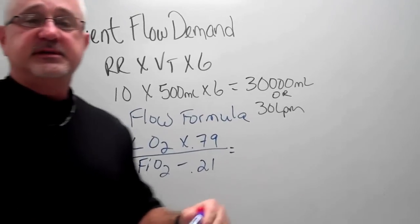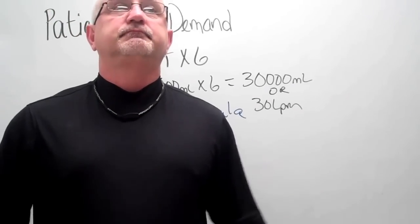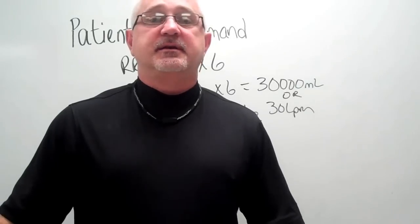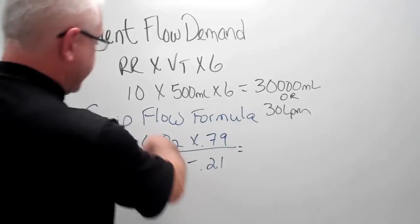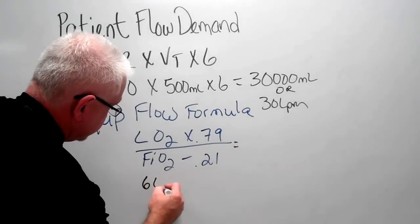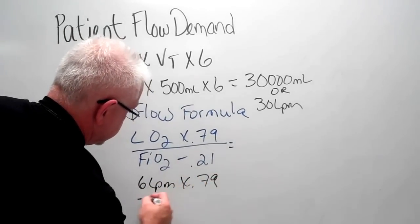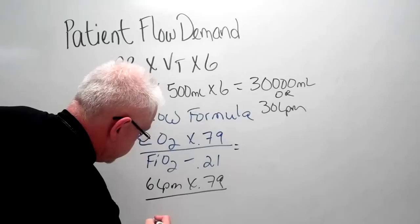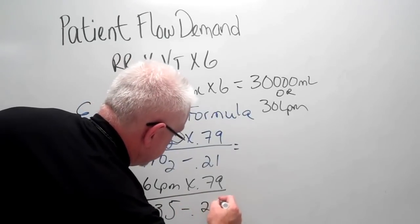So now if we said we were going to place a patient on a 35% Venturi mask that's running at 6 liters per minute, we'd have to plug the numbers in. 6 liters per minute times 0.79 divided by, my FiO2 I said was 35%, which would be 0.35 minus 0.21.